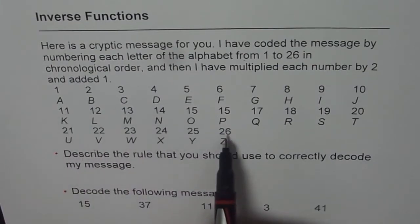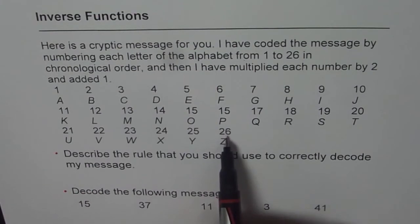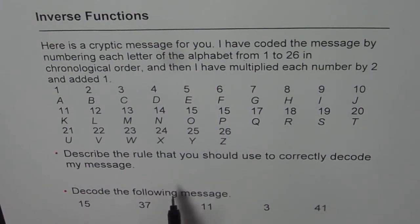So these are all the alphabets and for your reference the numbers written on top of each alphabet. That's the code. Describe the rule that you should use to correctly decode my message, and part 2 of this question is decode the following message.